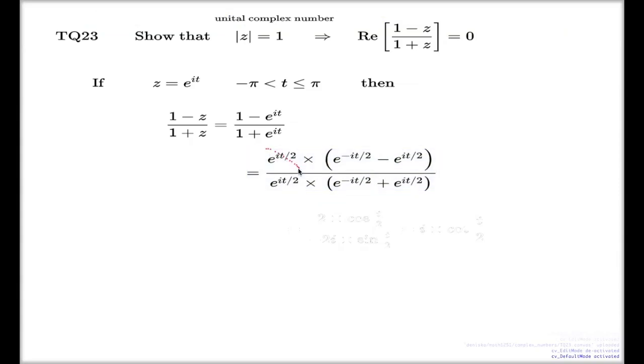You can cancel this out, and these brackets, these are the Euler formula which gives you, one of them gives you sine, the other one gives you cos.